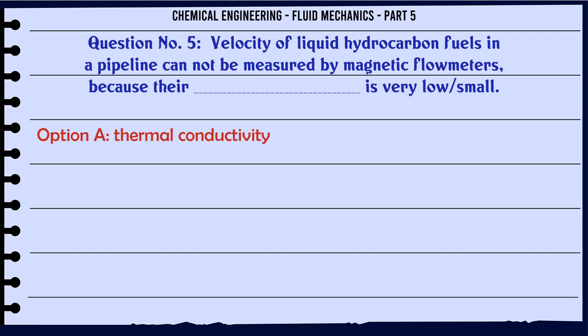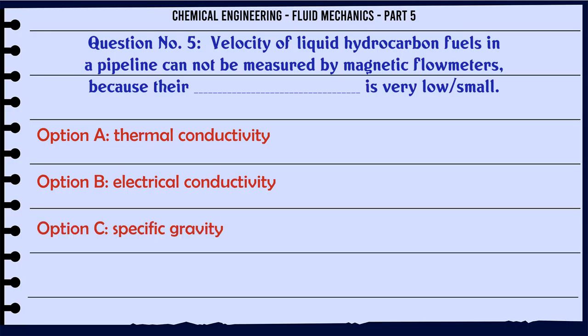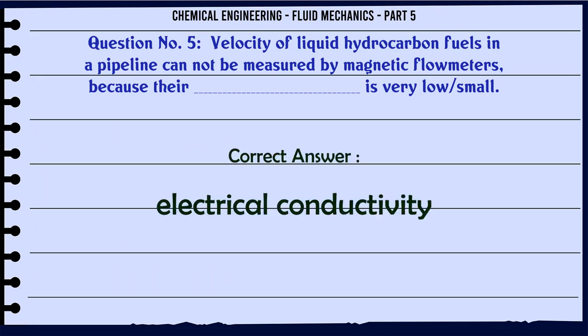Velocity of liquid hydrocarbon fuels in a pipeline cannot be measured by magnetic flow meters because there is very low: a) thermal conductivity, b) electrical conductivity, c) specific gravity, d) electrical resistivity. The correct answer is electrical conductivity.